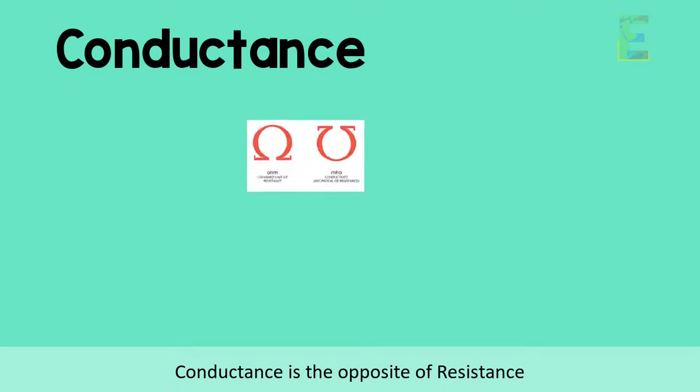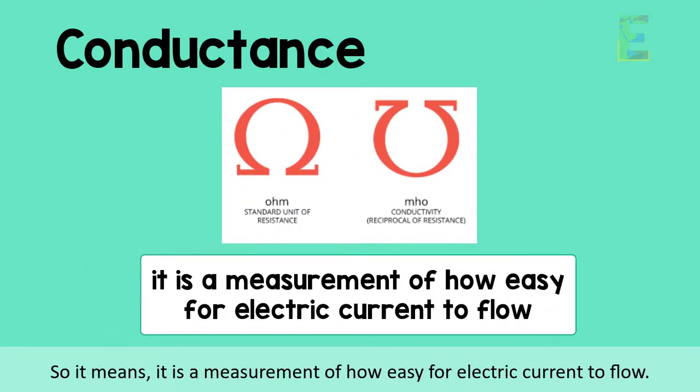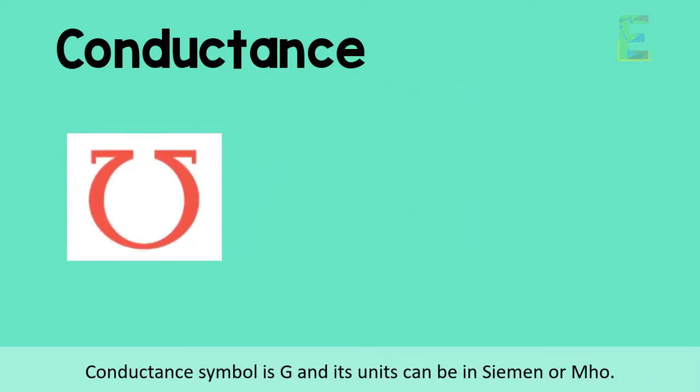Conductance is the opposite of resistance, so it means it is a measurement of how easy for electric current to flow. Conductance symbol is capital letter G and its unit can be in siemens or mho.